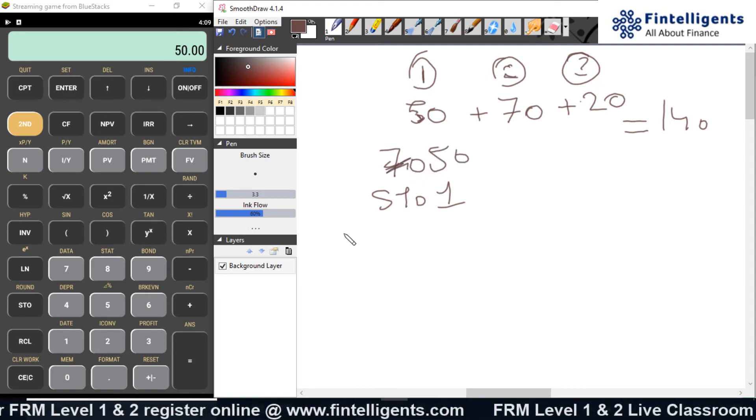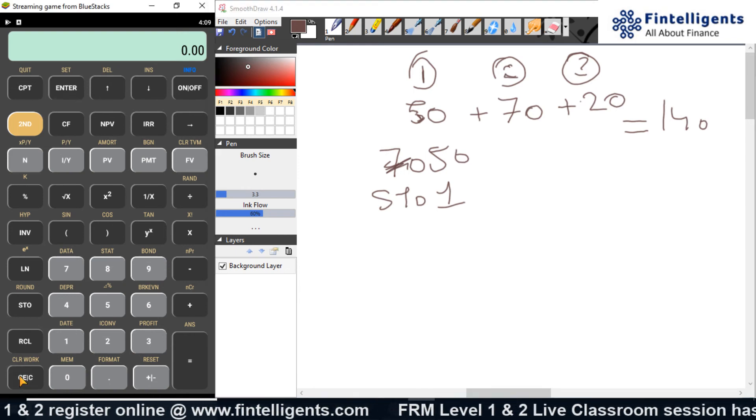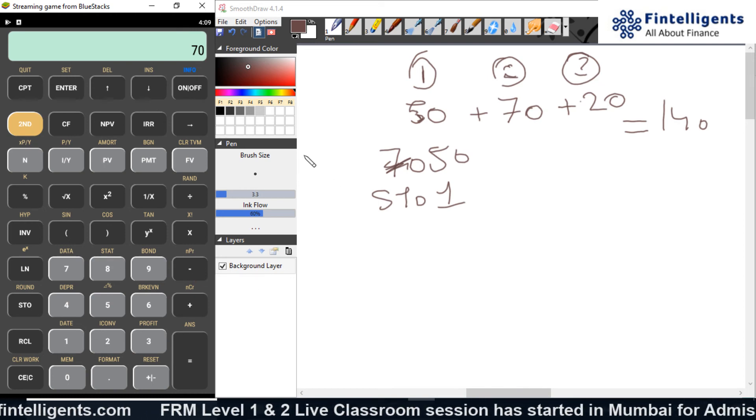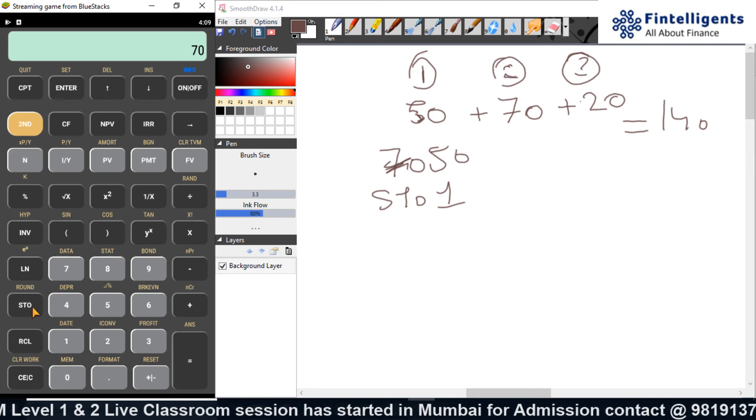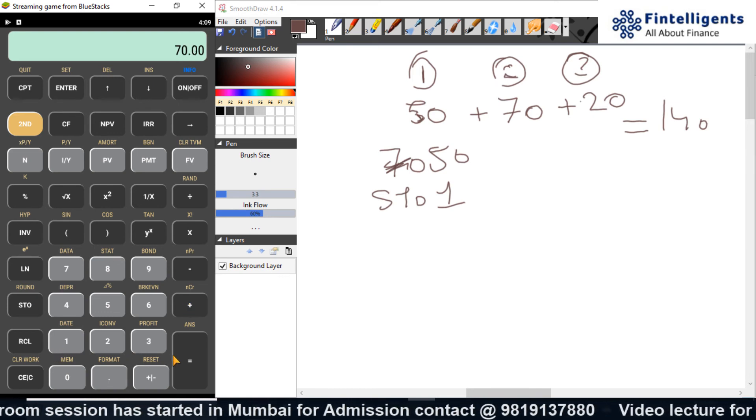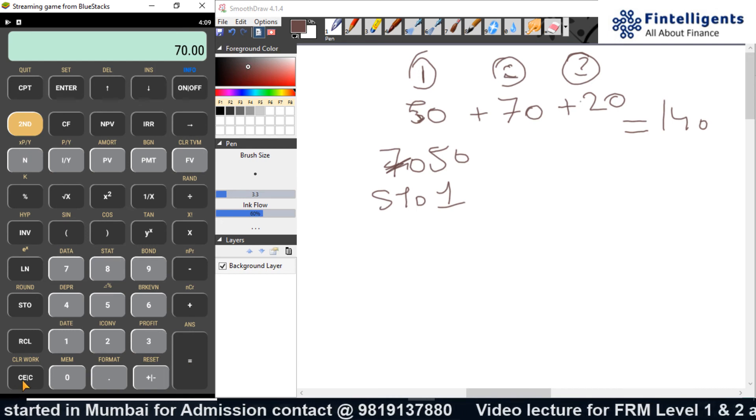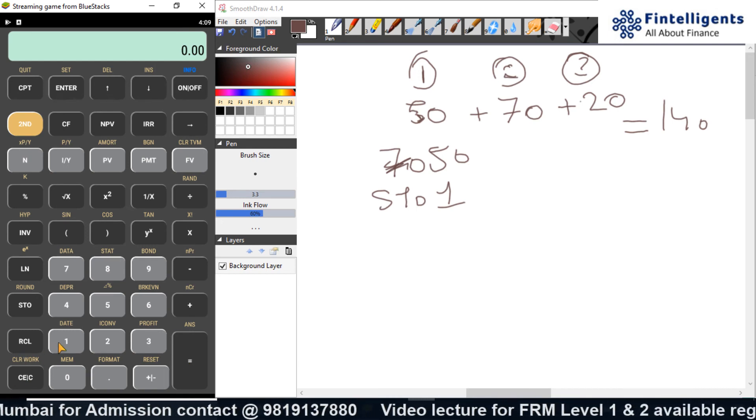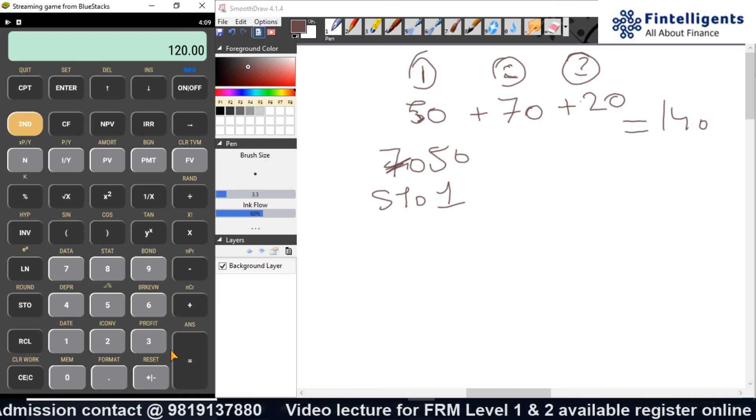And let me do the second calculation. Which is basically your 70. And I want to store back that number 70 to the calculation which is done saved in number 1. So, I will do STO plus 1. This will give me the answer recall 1. That is your 120.